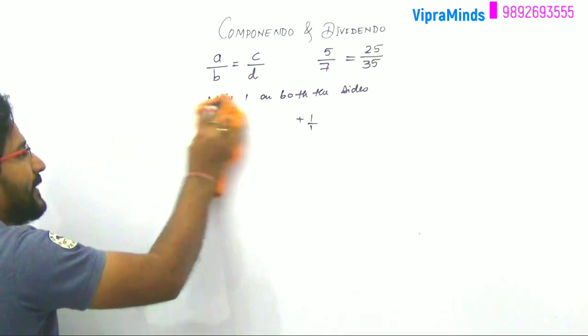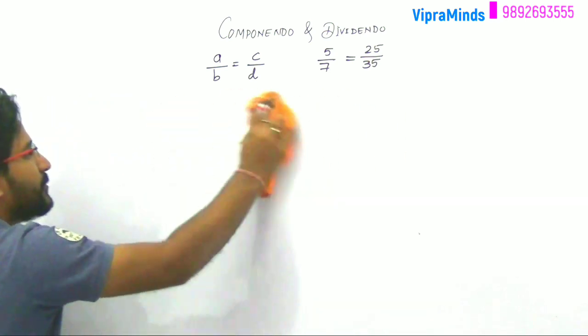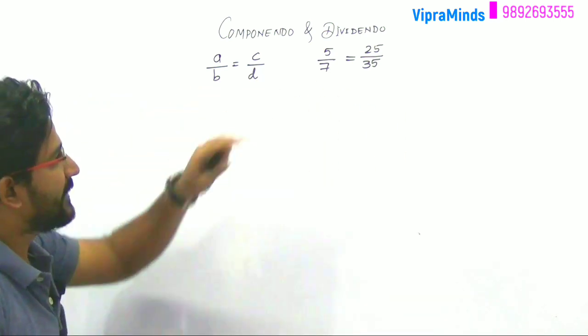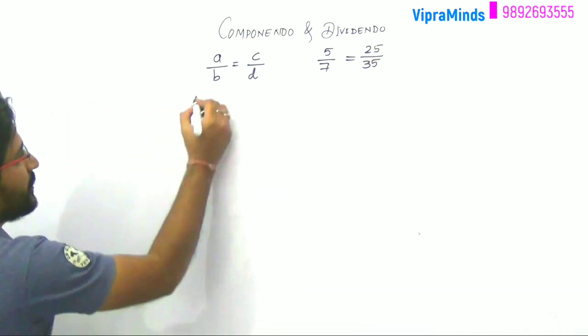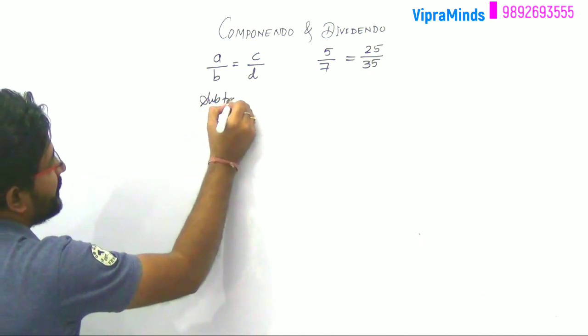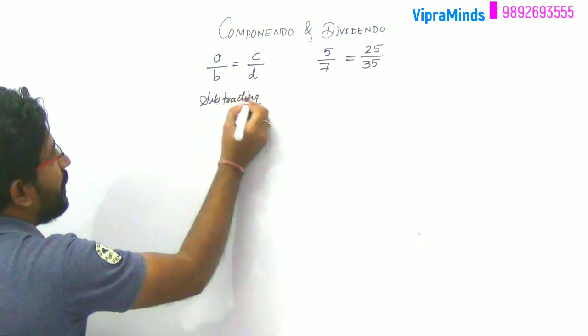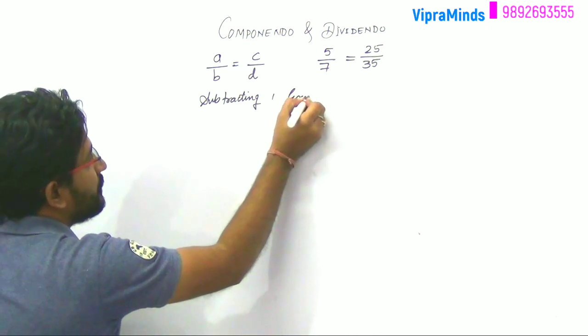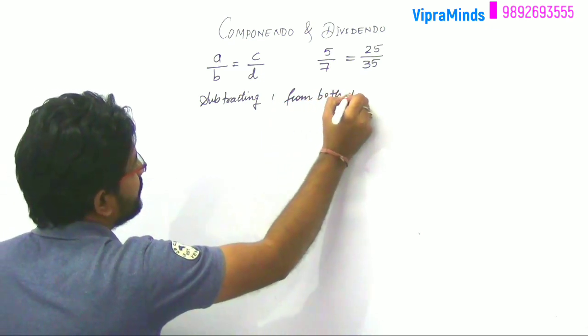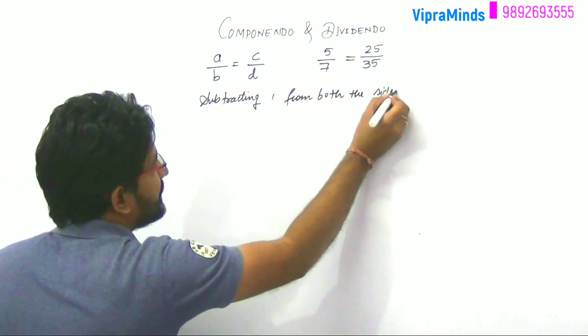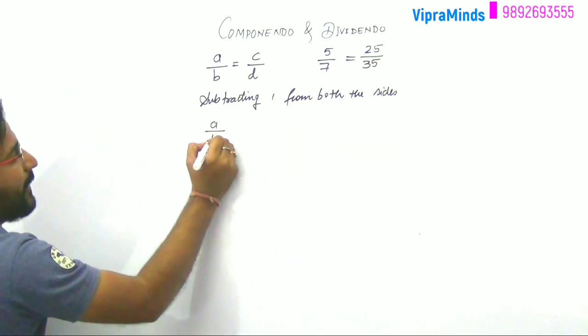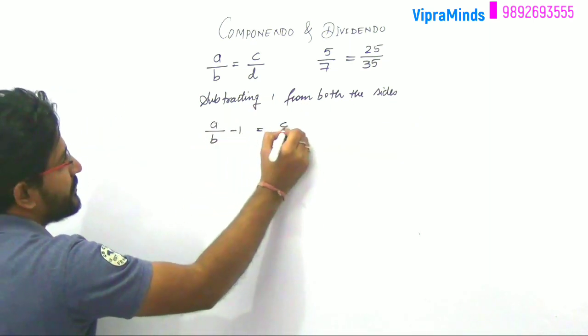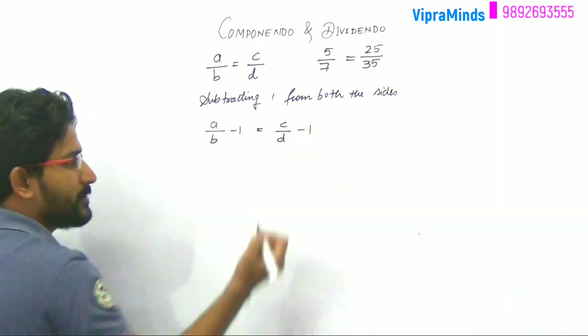Now Dividendo property. What is Dividendo property? If I do not say 1 minus 1, subtracting 1 from both sides, from both sides. What is a by b minus 1 equals c by d minus 1?